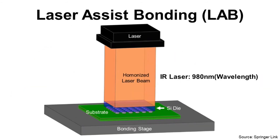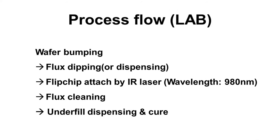The last one is LAB, laser assist bonding. It uses a laser to make connection between the bump and package substrate, specifically an infrared laser at 980 nanometers. It is the best solution for low-K devices because it can focus the IR laser at the bump interconnection and minimize thermal stress for the package. However, it requires a dedicated machine with an optic system. Its process flow is: flux dipping or dispensing, flip chip attach by IR laser, flux cleaning, underfill dispensing, and cure.